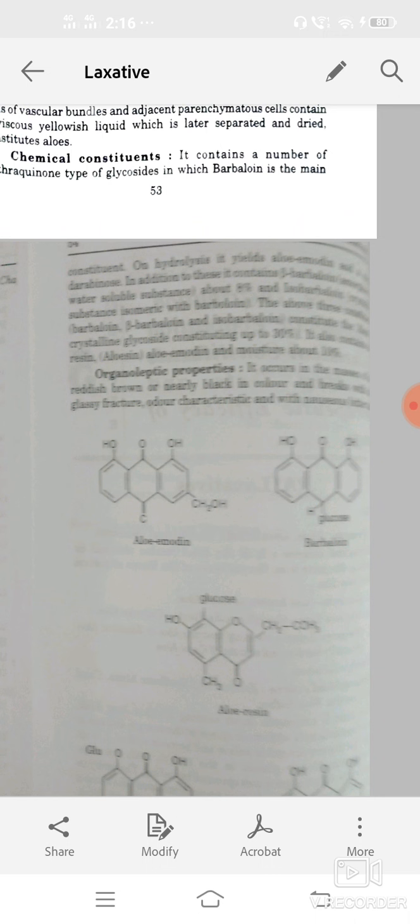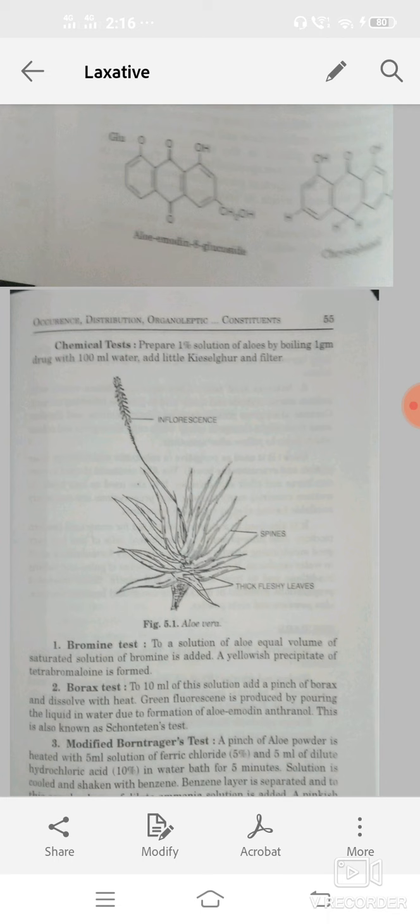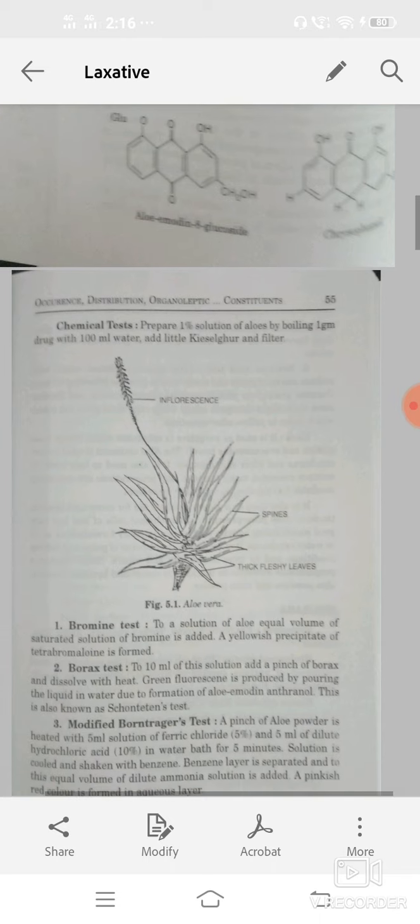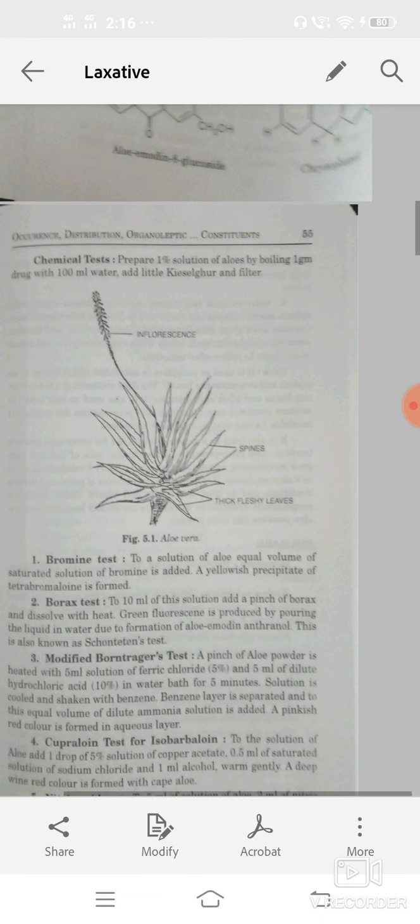Chemical test: prepare 1% solution of aloe by boiling 1 gram of drug with 100 ml of water, and then add little kieselguhr and filter. Different tests like bromine water test.